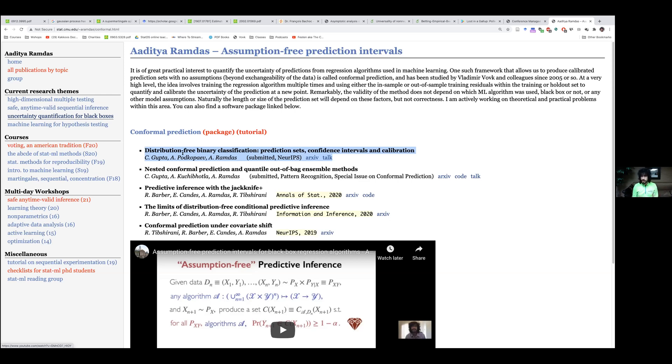Ultimately, like the main contribution of this paper is a distribution free way of providing calibration, post hoc calibration. So you have your own classifier that you've trained. Now I'm going to wrap around it and make that classifier produce calibrated predictions. And for those who don't know what calibrated predictions are, I'll just give you a very brief insight or intuition.